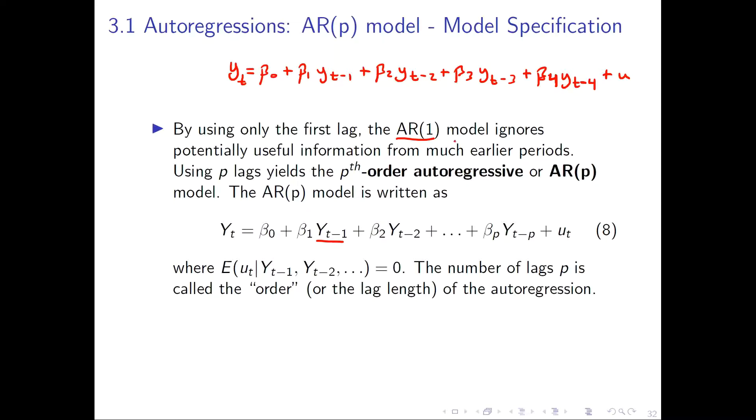And often you would call this an AR(p) model because you have p lags in your model. And the number of lags in your model is called the order of the autoregressive model.